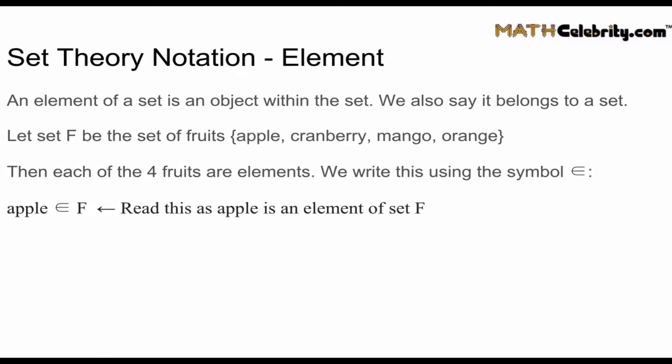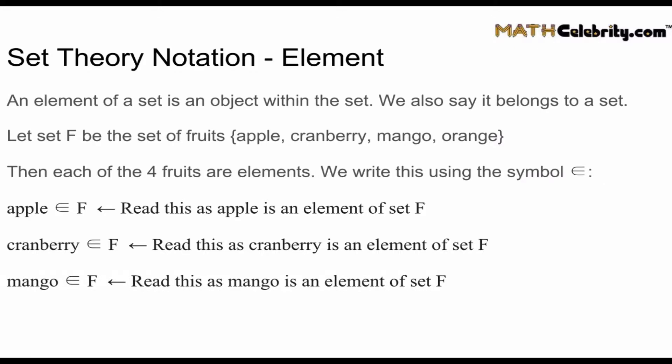Apple is an element of F. Cranberry is an element of F. Mango is an element of set F. And finally orange is an element of F.